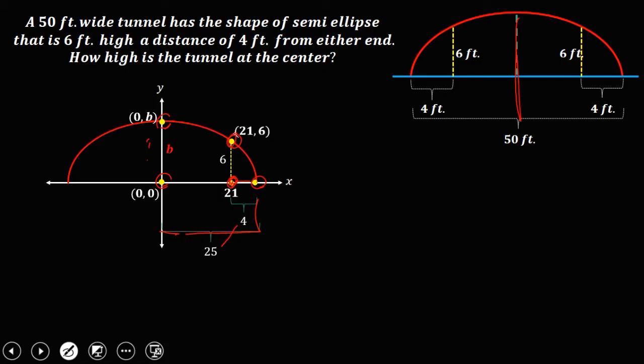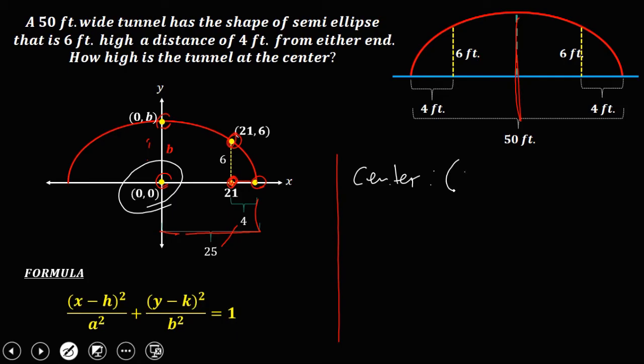Now, formula to use, since our ellipse is in horizontal position, we're going to use the (x-h)²/a² + (y-k)²/b² = 1 formula. To find the center, the center of our ellipse, we have (0, 0).